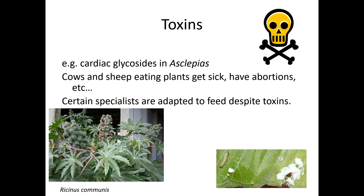The third class of defensive compounds is toxins. These include cardiac glycosides in Asclepias — the milkweed plants — and other cases where cows, sheep, or other herbivores eat those plants and experience spontaneous abortions. We know a lot about these different defensive chemicals, but in most cases we don't know how these compounds impact their target herbivores. There's a huge range of compounds for which we have no idea how they work biochemically or whether they might be useful medicinally — a great area to go into.